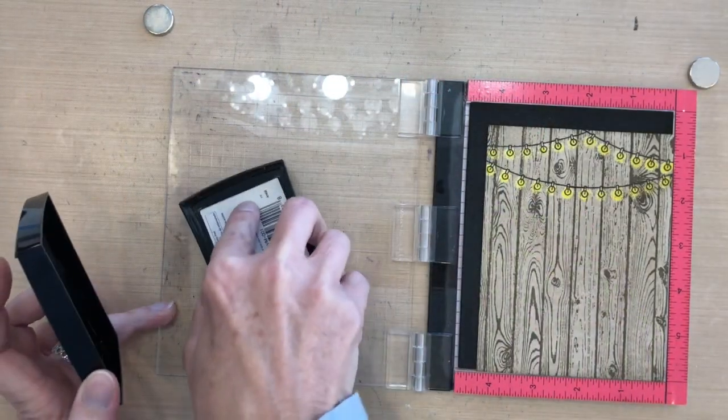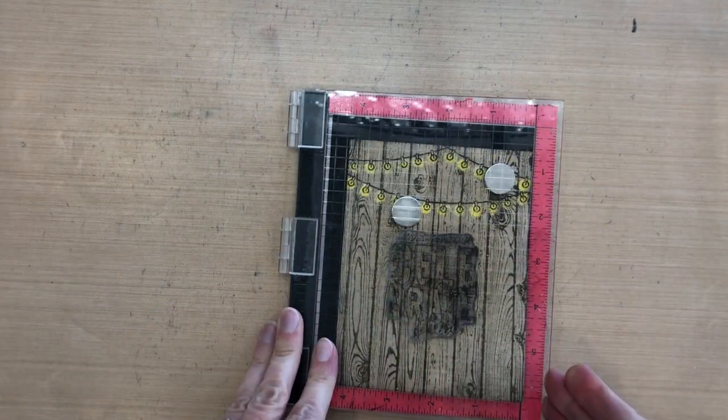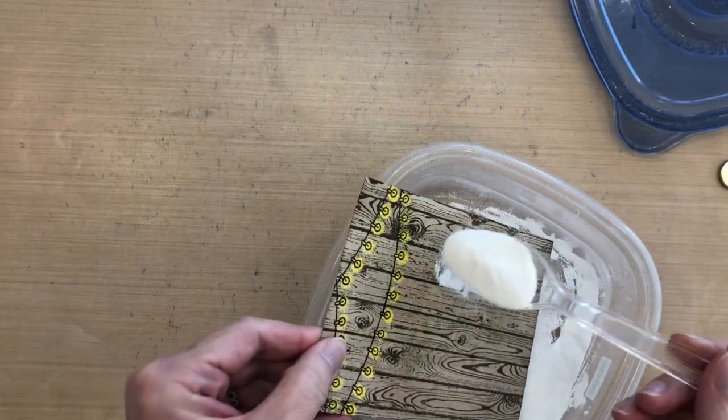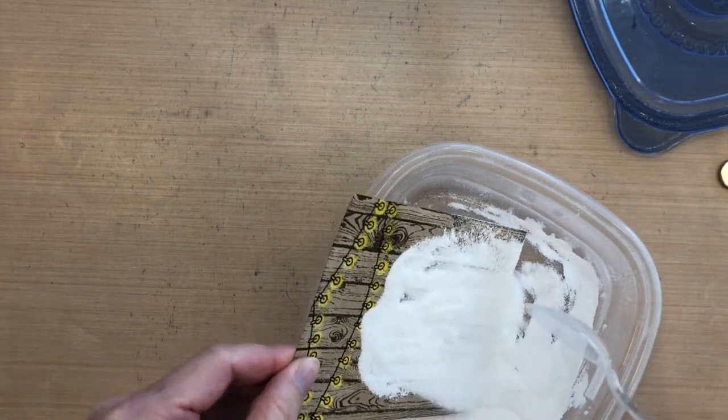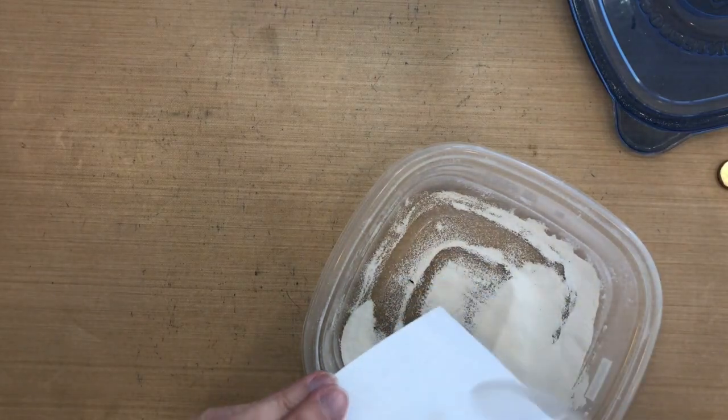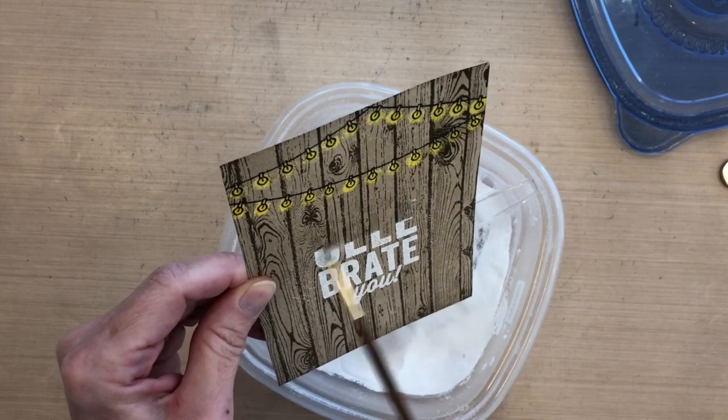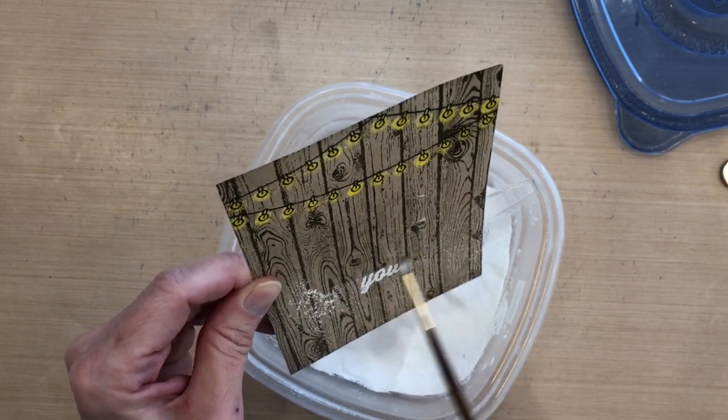So I'm gonna line it up in my MISTI and I'm gonna take some Versamark ink and press it down here and I'm gonna make this white embossed. So I'm gonna put some powder on and this is when I found out it had been drying for probably 15 minutes because I had to go out and do something but it was still sticking. So I had to take a brush and wipe off everything. It was sticking to the fence that I had stamped with the memento ink.